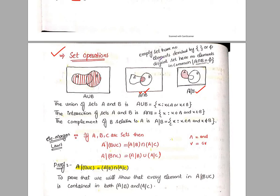Next, what are disjoint sets? These are sets in which there are no common elements. For example, if I say A and B are disjoint, it means their intersection is an empty set. So these are called disjoint sets.